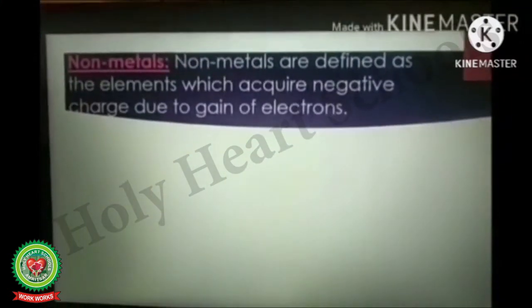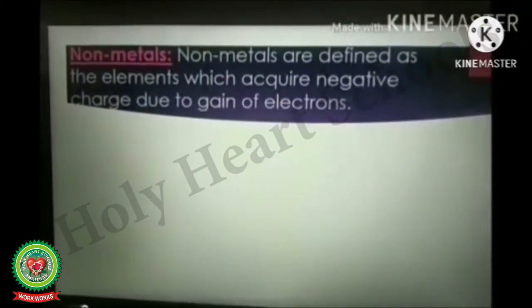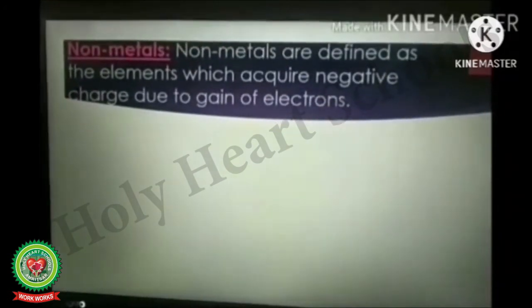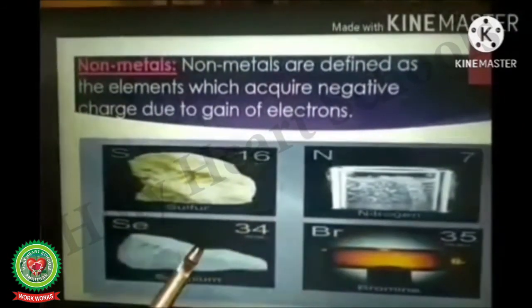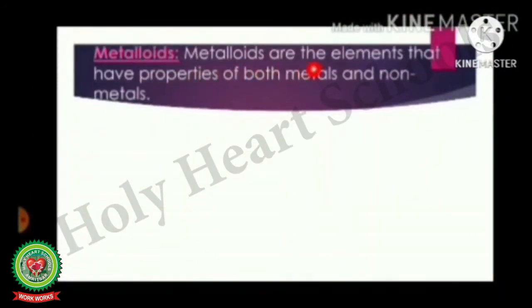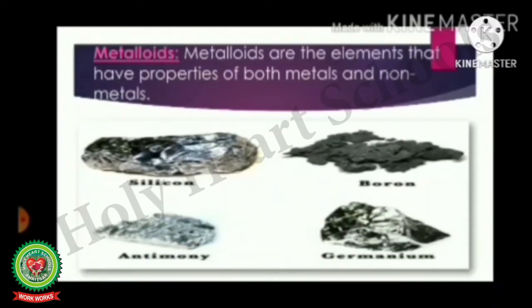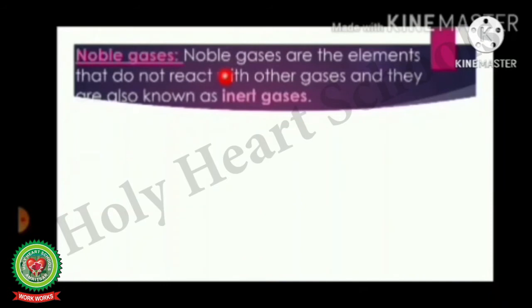Non-metals are defined as the elements which acquire negative charge due to gain of electrons. Examples are sulfur, nitrogen, selenium, and bromine. Metalloids are the elements that have properties of both metals and non-metals. Examples are silicon, boron, antimony, and germanium.